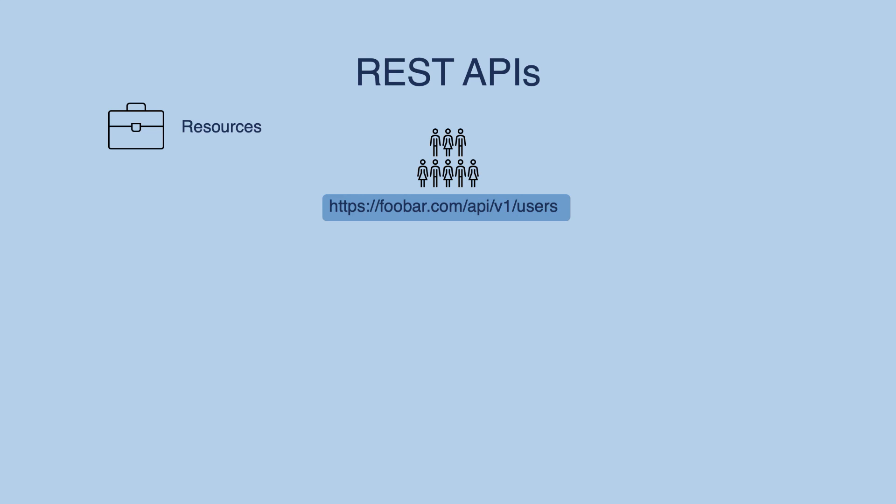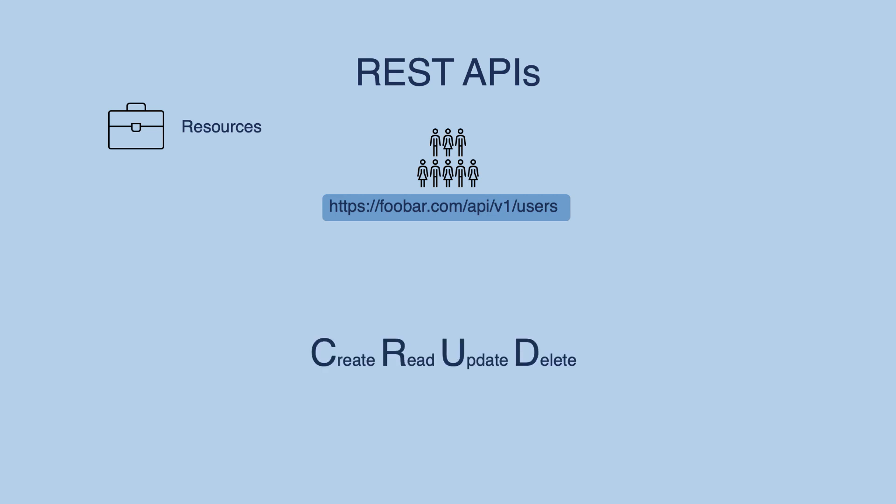REST APIs are all about resources. Typically, you would name your resources using nouns — using verbs like 'get user' is incorrect in REST APIs. Each resource would typically have two URLs: one for the collection, like 'users' in this case, and another for an entity in that collection by specifying the identifier of that entity. Consumers would be allowed to use these resources using CRUD-like operations — your typical create, read, update, and delete operations — these are perfect for REST APIs.